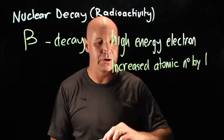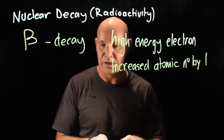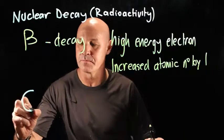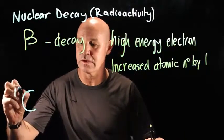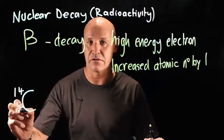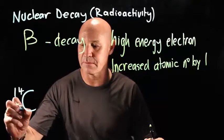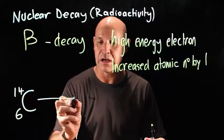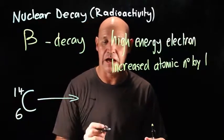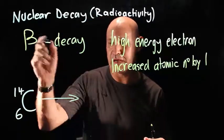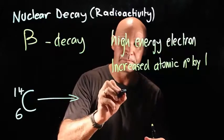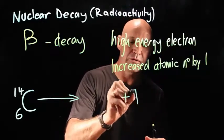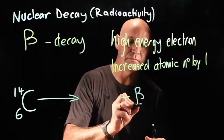Let's go through an example. Here's carbon-14, and of course the atomic number for carbon is 6. So when it undergoes beta decay, first I write the beta particle.